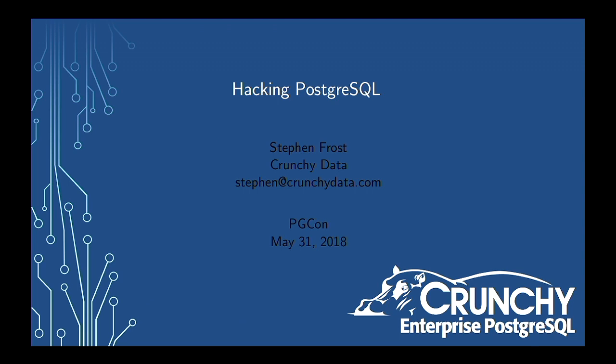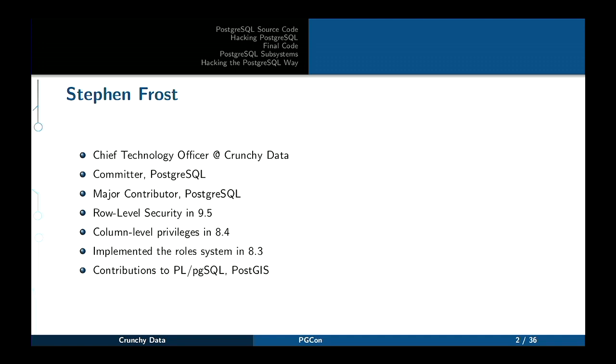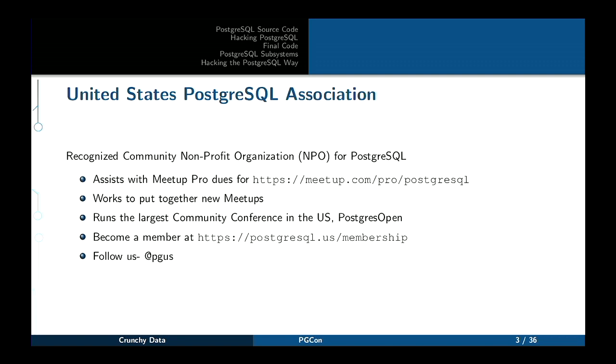I think we'll go ahead and get started. People will come and go as they please, and the first couple slides are boring anyway because they're about me. So this is a hacking Postgres talk. I'm the chief technology officer at Crunchy Data, I'm also a Postgres committer and major contributor. I hacked a lot on row-level security in 9.5, column privileges in 8.4, rule system in 8.3, and I've also hacked on PLPGSQL and PostGIS. Quick mention for the United States Postgres Association — this is the recognized community nonprofit for Postgres, so people should go check it out and follow us at PGUS.